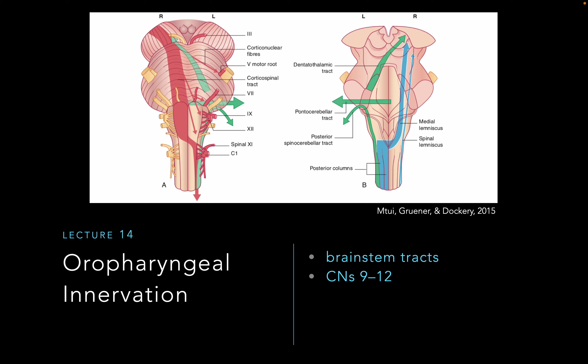Collectively, these will innervate the oropharyngeal components, but the vagus will extend beyond the pharynx, hitting the esophagus, the rest of the GI tract, the heart, providing the majority of parasympathetic innervation.